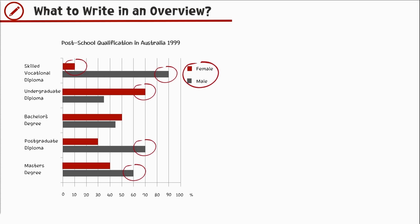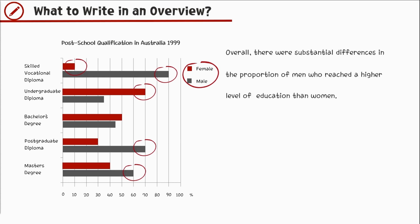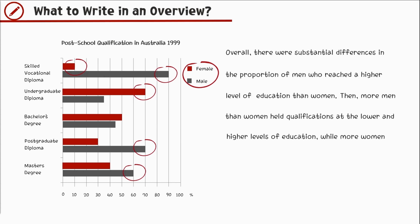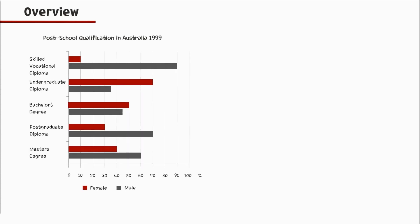So those are the key features. If you look at the graph, there are more gray than red. This is our overview: 'Overall, there were substantial differences in the proportion of men who reached a higher level of education than women. More men than women held qualifications at the lower and higher levels of education, while more women than men reached undergraduate diploma level in 1999.' To be awarded band 7 to 9, make your overview clear by following the checklist in our earlier video. A link is provided below for reference.